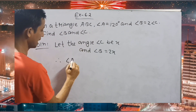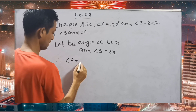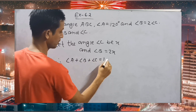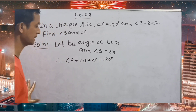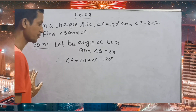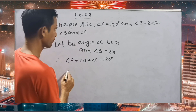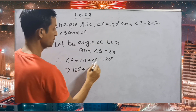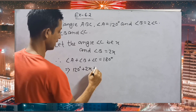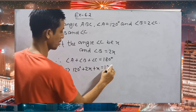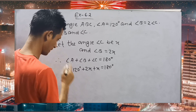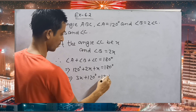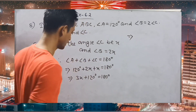Therefore, angle A plus angle B plus angle C is equal to 180 degrees — sum of three angles of the triangle. Angle A is 120 degrees, angle B is 2x, and angle C is x. It is equal to 180 degrees. So from here, 3x plus 120 degrees is equal to 180 degrees.